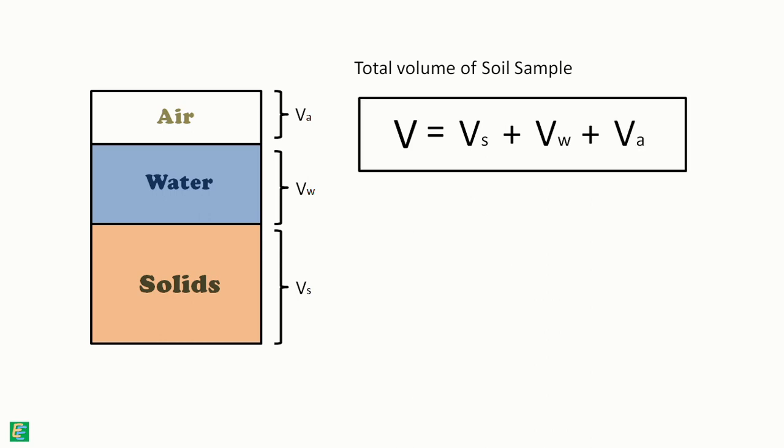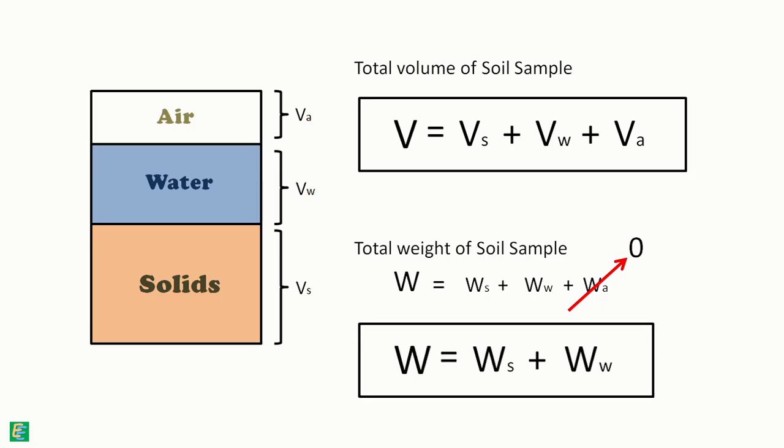Also, the total weight of soil sample W is equal to the weight of solids Ws plus weight of water Ww plus weight of air Wa. But for all practical purposes, weight of air is considered as zero. Hence, the weight of soil sample is only weight of solids plus weight of water.